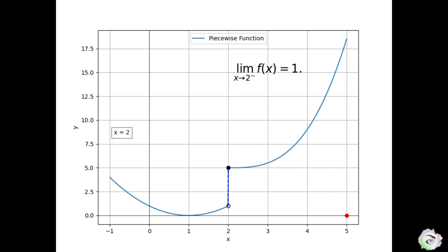Let's now concentrate on the right limit. To find the right limit at 2, we have to approach 2 from the right side. Let's start from the furthest point under the graph on the right side, which is marked by the red dot. To find the point on the graph corresponding to the x coordinate in red, let's draw a vertical line from the red point to the graph.